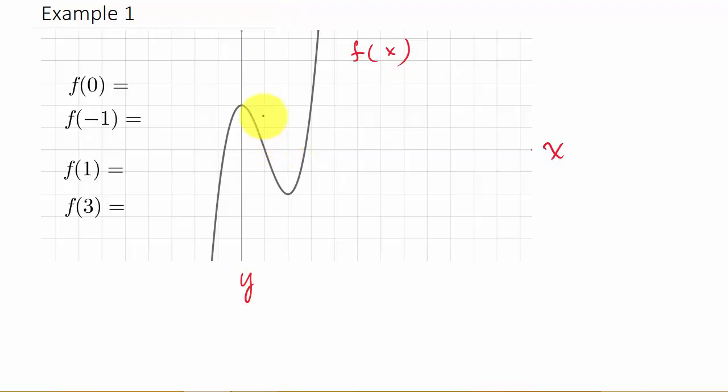So looking at this, we want to find f of 0. You can see x is in parentheses. So when x is 0, we want to know what's y. On the x-axis, we go to where x is 0, which is right here.